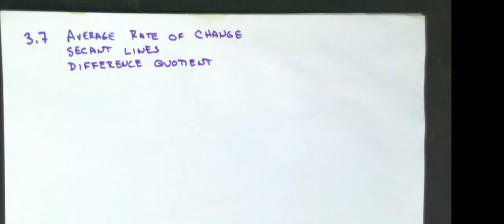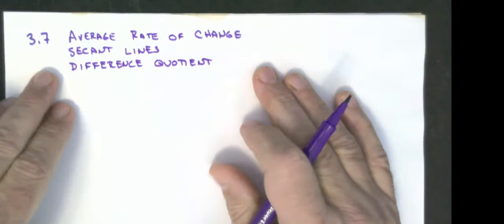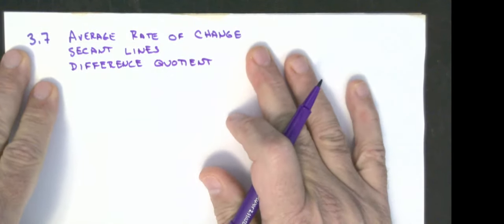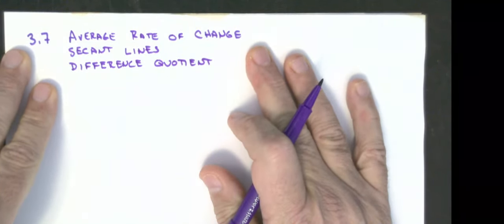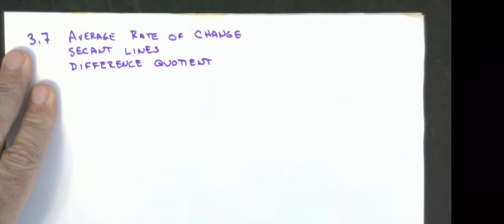Our last section of chapter 3 is 3.7, where we're going to cover average rates of change, secant lines, and difference quotients.